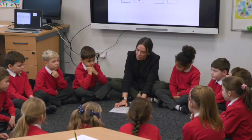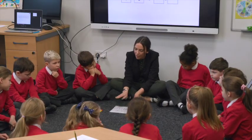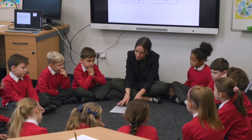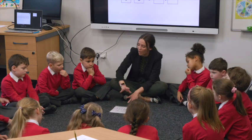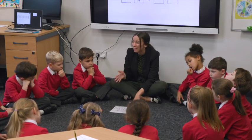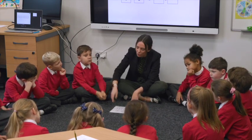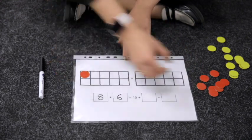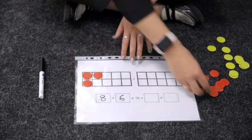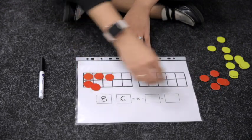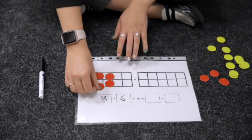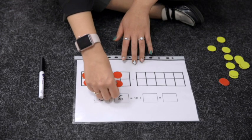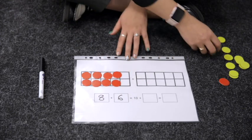Okay, so have a little look — I've got my calculation here. I've got eight add six and I need to make this on my tens frame. We're going to make 10 to find my final answer, because remember, that's quicker than just counting on. So I'm going to make eight first with my red counters, then I'm going to make my six yellows on my other tens frame.